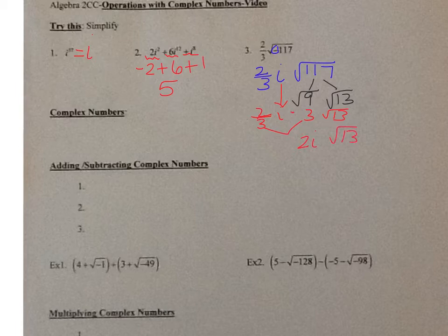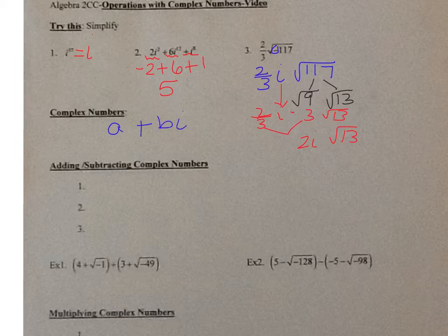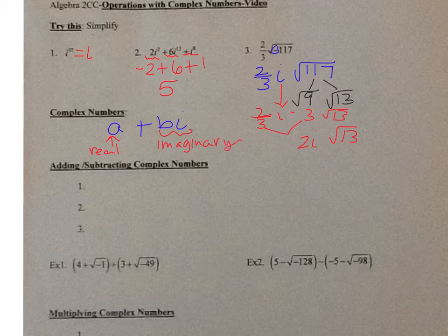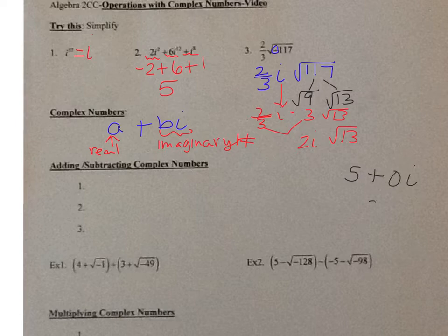A complex number is a number written in the form A plus Bi, where A is your real number and Bi is your imaginary number. Any number can be written as a complex number — for instance, 5 can be written as 5 plus 0i, and 3i can be written as 0 plus 3i.